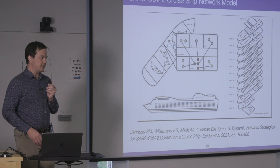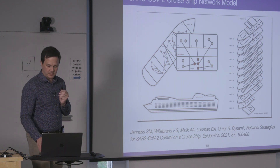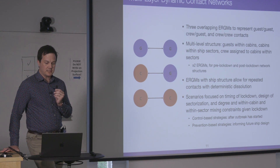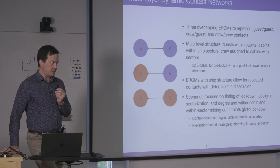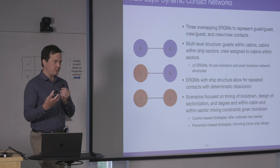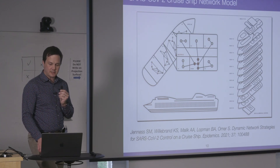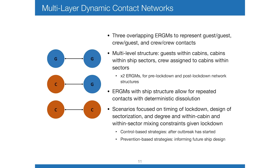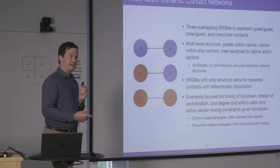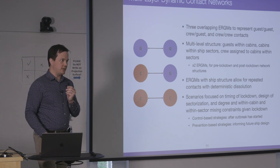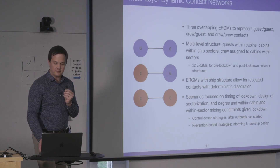Passengers have random sporadic contacts with other passengers and crew members. This was a multi-layer dynamic contact network where layers represented types of contacts: passenger-to-passenger, crew-to-guest, or crew-to-crew. People were assigned to particular cabins and sectors of the ship. After the outbreak was detected, the ship was locked down — people were essentially confined to their cabins until the ship docked and quarantine began.